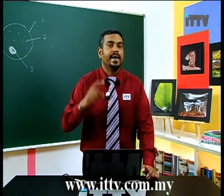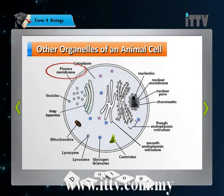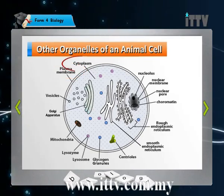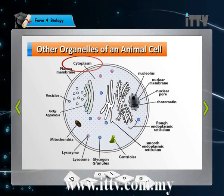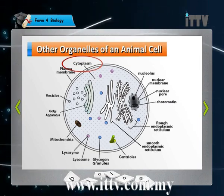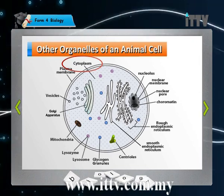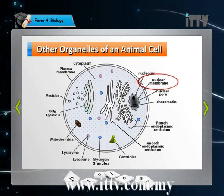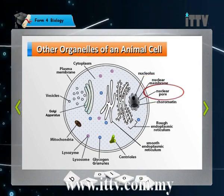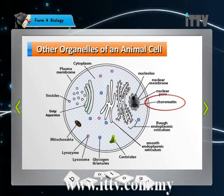The plasma membrane controls substance movement in and out of the cell. Next you have the cytoplasm, which is a jelly-like substance that suspends all the other organelles found in it. Next, you can find a nucleolus, nuclear membrane, nuclear pore, and chromatins found inside the nucleus. When you were in PMR all you knew was a bunch of scribblings called the nucleus — but now, the nucleus itself has a membrane with pores in it.